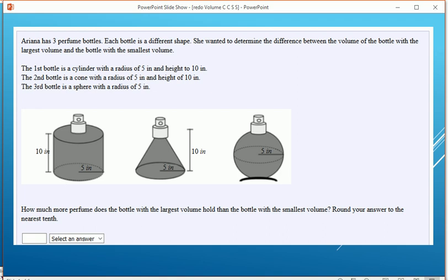We're going to be calculating the volume of these three perfume bottles to determine the difference between the biggest one and the smallest one. Here are the formulas we're going to be using for the cylinder, the cone, and the sphere.